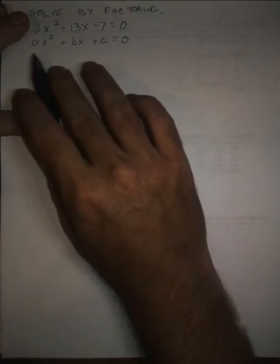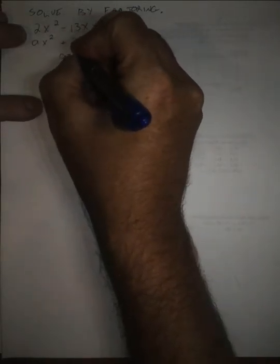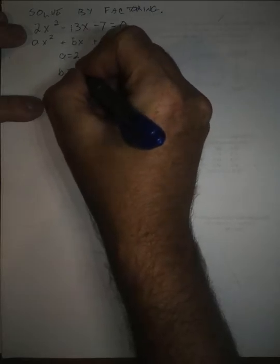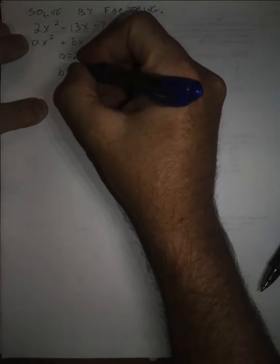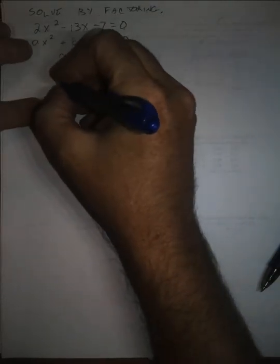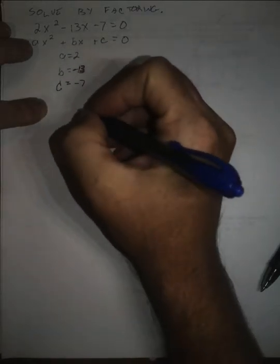This polynomial expression is in standard form. And so if we were talking about the different terms, we would say a equals 2, b equals negative 13, and c equals negative 7.